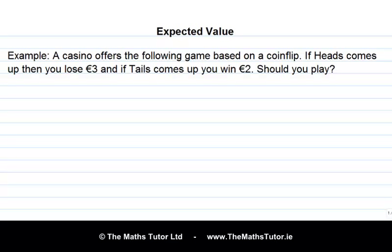Suppose that a casino offers the following game: you flip a coin, and if heads comes up you hand over three euros, and if tails comes up you get two euros. Would you play this game? Most people will say straight away this looks like a bad deal — you're losing more for heads than you're winning when tails comes up, and that seems intuitively to be a bad deal.